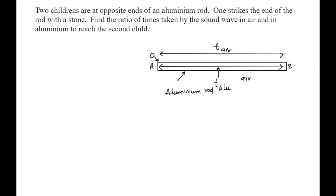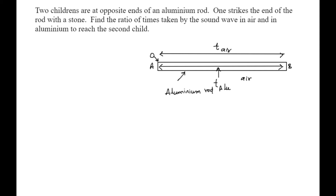I want to calculate the expression for T_air and T_aluminium and then take the ratio of the two to solve the problem. The velocity of sound is very high in aluminium and very low in air, so there is a difference in timing — the sound reaches very quickly through aluminium compared to air.